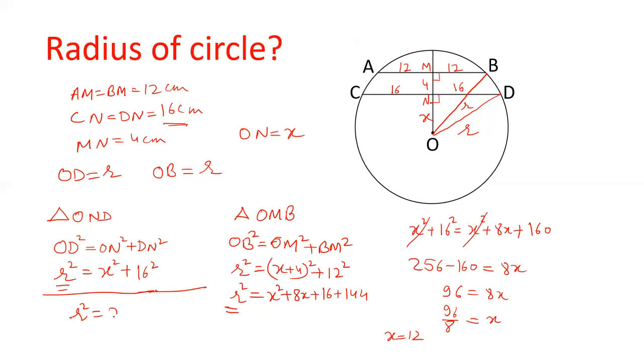R square equals X square plus 16 square. X is 12, so 12 square is 144, 16 square is 256, that is 400. So the value of R equals 20. So the radius of the circle will be 20.